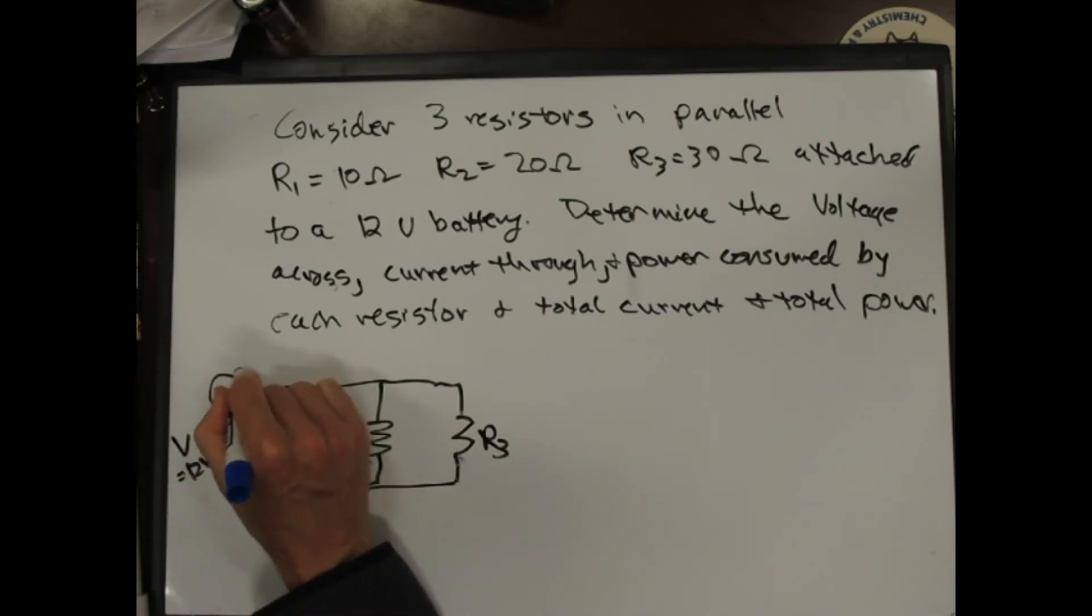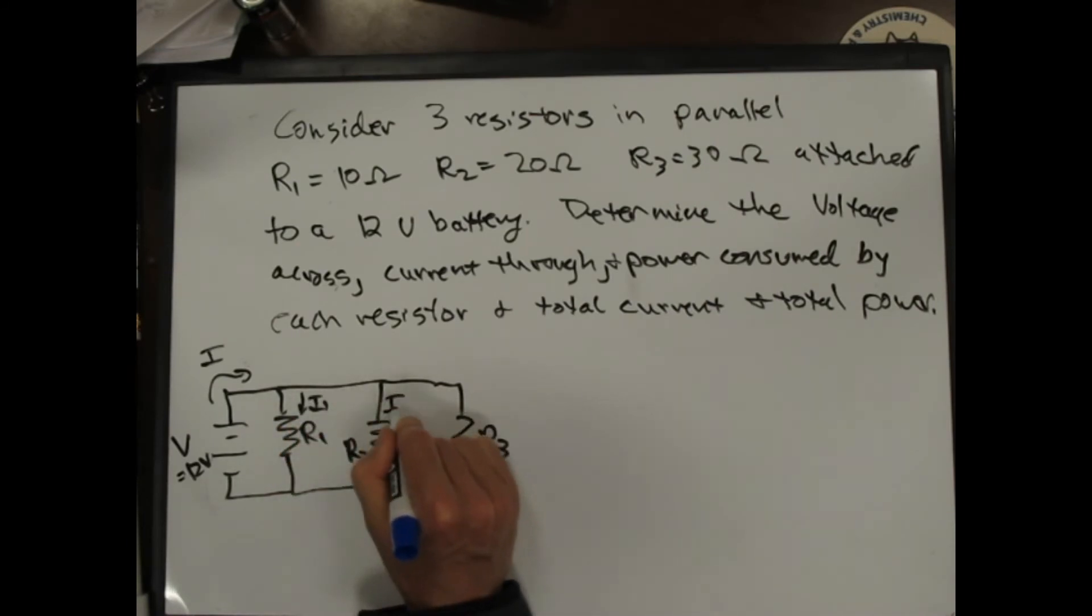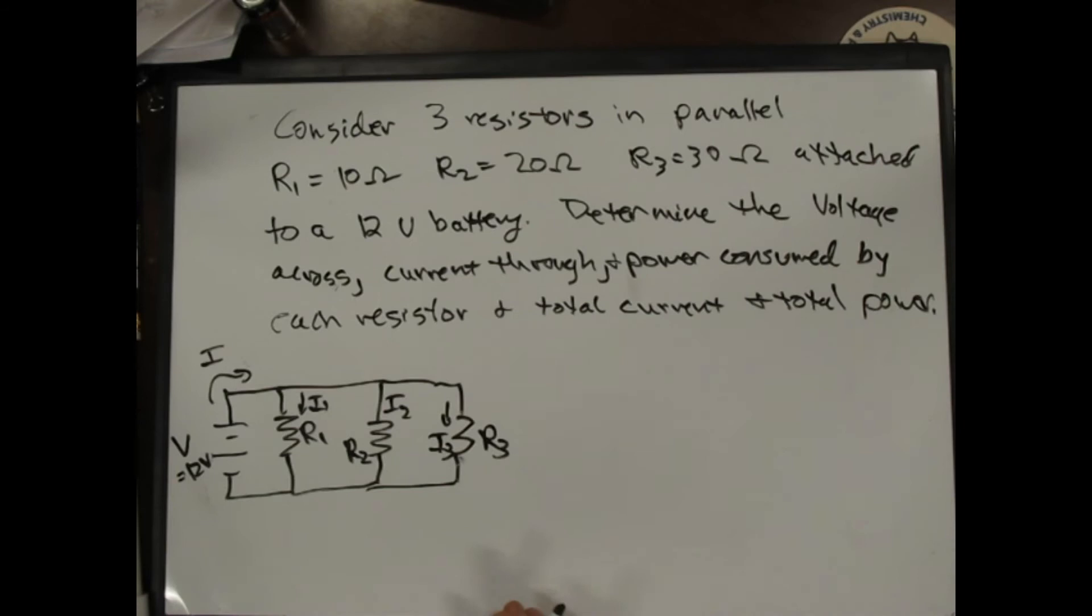I'll have a total current here, I. And here I'll have I1. Here I'll have I2. And here I'll have I3. And we want to determine all of this along with the powers and all that stuff.